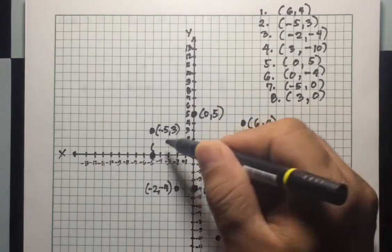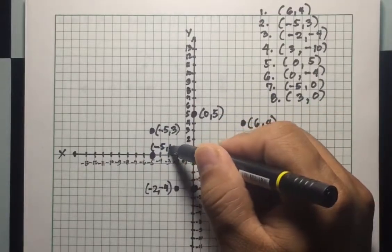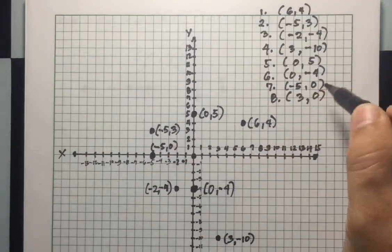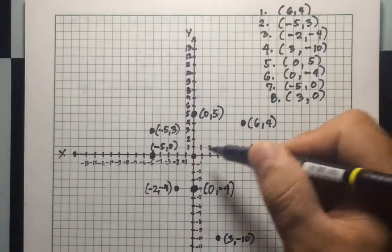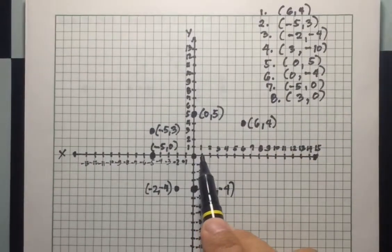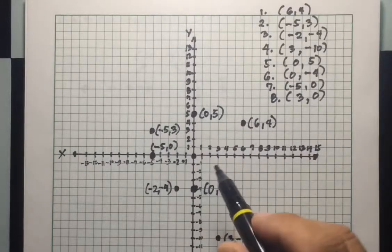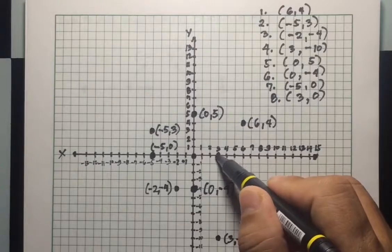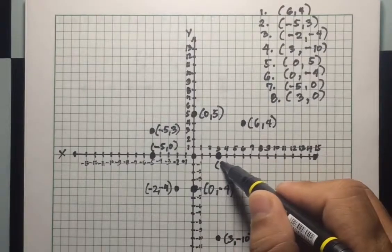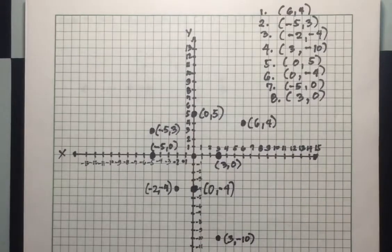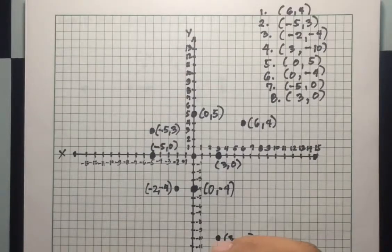For number eight, the point is (3, 0). X is positive so move three units towards the right: one, two, three. Y is zero so you will not move upward or downward. This is point (3, 0). I hope this video helps — see you next time!